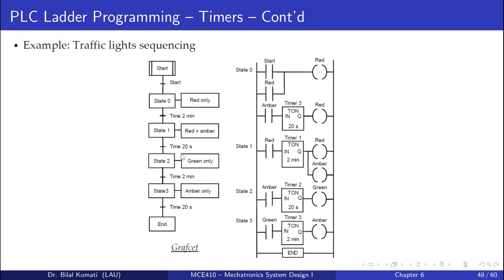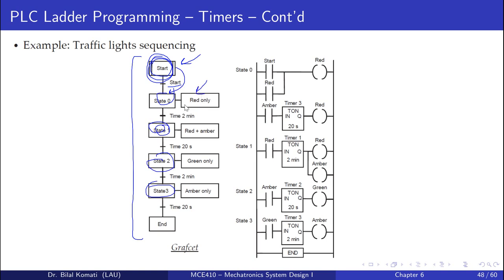For traffic light sequencing using Grafcet: a Grafcet graph has states and conditions to switch from one state to another. The beginning of the program is a state, then we have a start condition to pass to the next state. No action happens in the state itself — the block connected to the state is the action to be performed, such as turning on a light, a motor, or a conveyor.